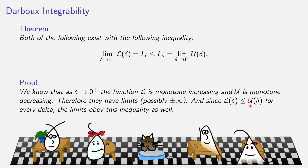Since L of delta is less than or equal to U of delta for every particular delta, this limit can't be bigger than that one. This rules out, for example, that L sub L could be plus infinity while L sub U is a real number. Maybe they're both plus infinity, or both minus infinity, or maybe this one is minus infinity and this one is plus infinity. Or maybe they're real numbers and just different. But the limits exist, either as real numbers or as plus or minus infinity, obeying L sub L ≤ L sub U.